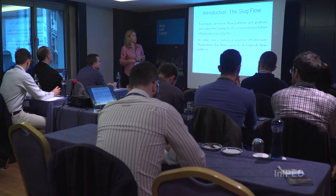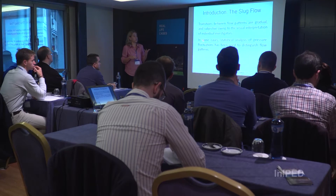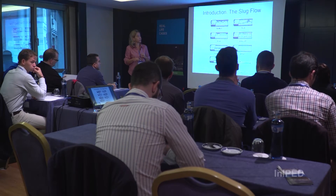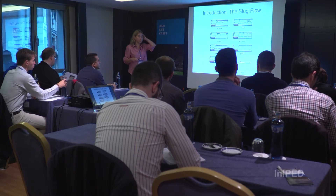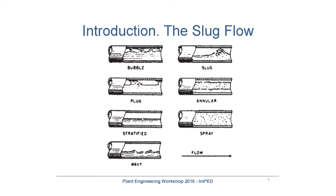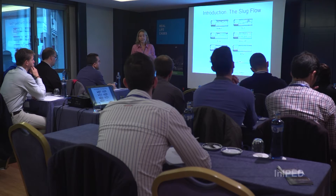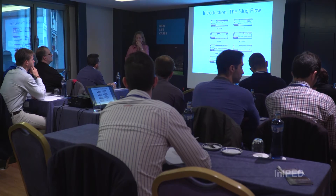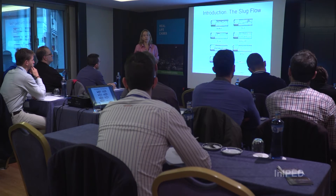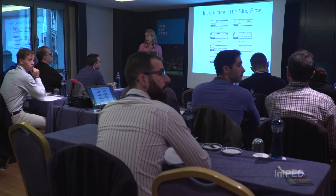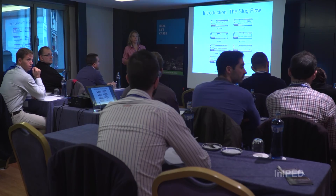In some cases, statistical analysis of pressure fluctuation has been used to distinguish the flow pattern. Here are some types of flow patterns we can have: plug, annular, and slug. For the process department, the difficulty in providing us as piping engineers the information regarding slug flow is mainly in identifying which pattern they have and under what conditions. It's not impossible, of course — it's just difficult, and depending on the company or process, they have more or less tools to get that information.